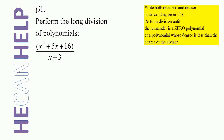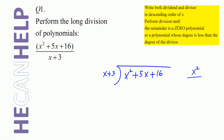Question number one is x squared plus 5x plus 16 divided by x plus 3. So what is the dividend? x squared plus 5x plus 16. What is the divisor? x plus 3. What is the leading term of the dividend? x squared. What is the leading term of the divisor? x. Take the leading term of the dividend and divide it by the leading term of the divisor, and what do we get? x. So that's what we put here. And that x times x plus 3 — what is x times x plus 3? It is x squared plus 3x.